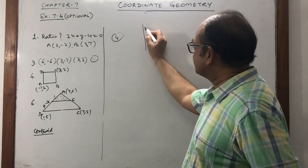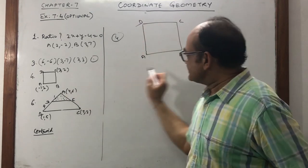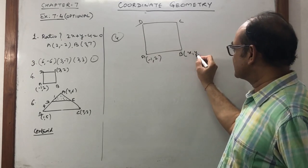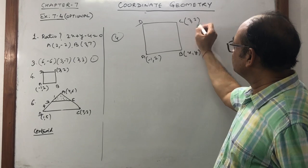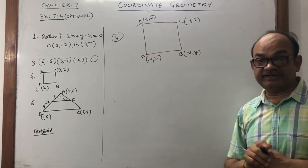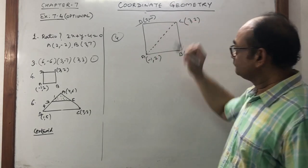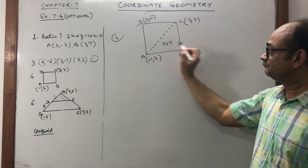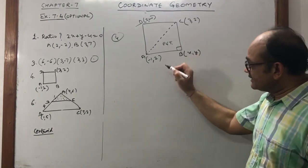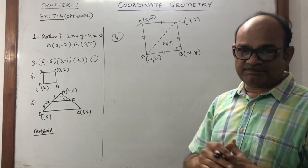Question number 4. A square is given with four coordinates, but two are missing. Corner A is (minus 1, 2), B is missing — suppose (x, y) — C is given as (3, 2), and the fourth corner D is also missing — say (z, w). We want to calculate the opposite coordinates B and D. If we join A to C, it forms the hypotenuse of a right triangle, and since it is a square all four sides are equal.